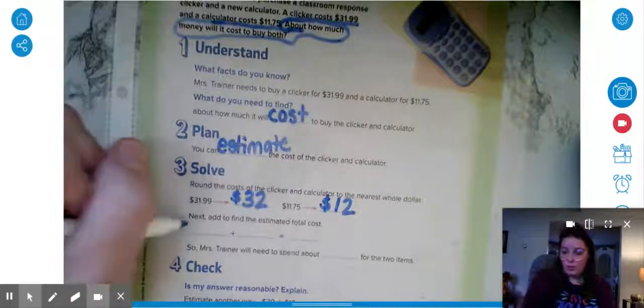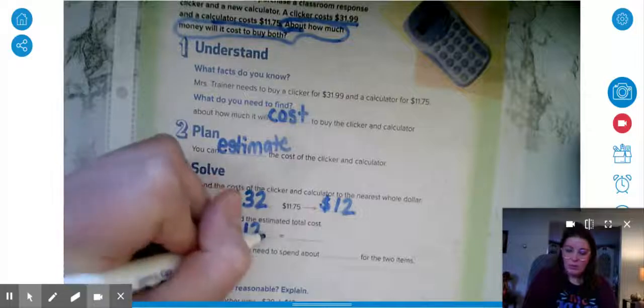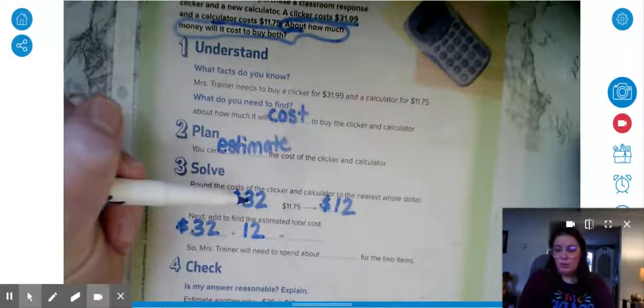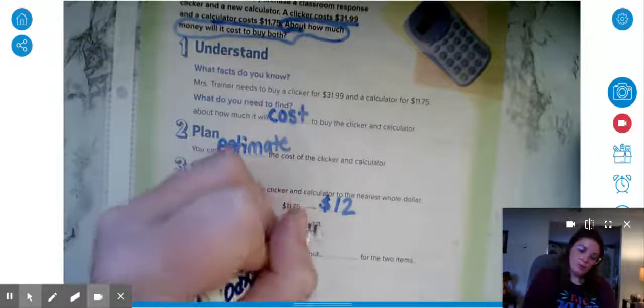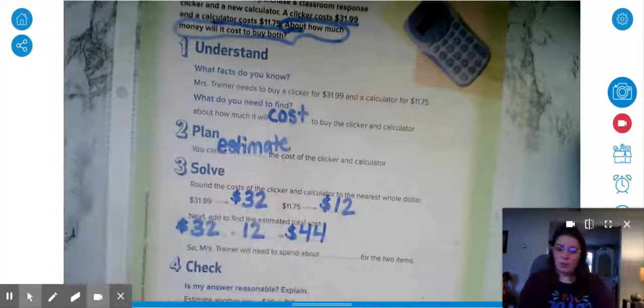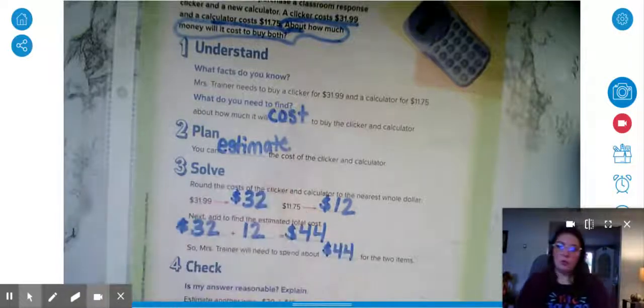So to find the total cost I can add together those rounded amounts. $32 plus $12 is $44. So Mrs. Traynor will need to spend about $44 for the two items.